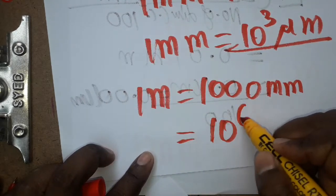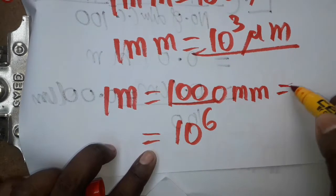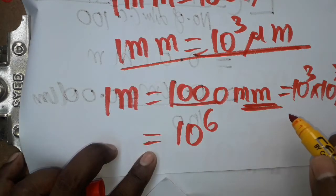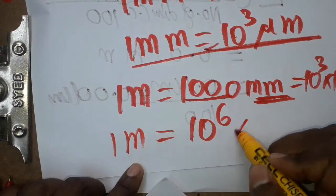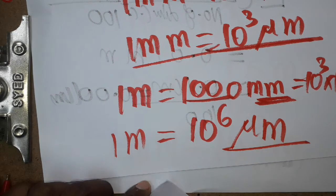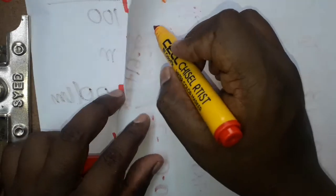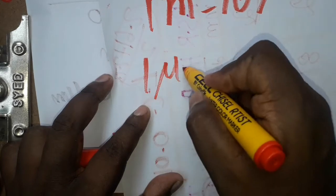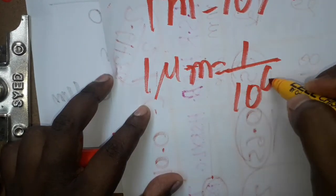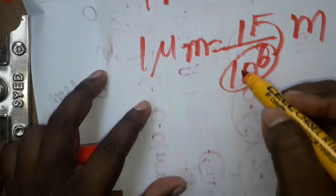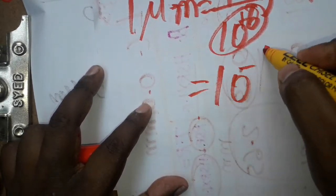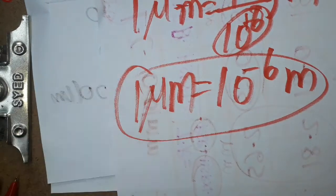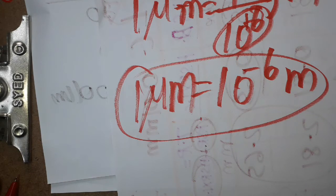Since one meter is 1000 millimeters and one millimeter is 1000 micrometers, we get 10 power 3 multiplied by 10 power 3, which equals 10 power 6 micrometers per meter. Therefore, one micrometer equals 1 divided by 10 power 6 meter, which is 10 power minus 6 meter. Thank you, if you like my channel please subscribe.